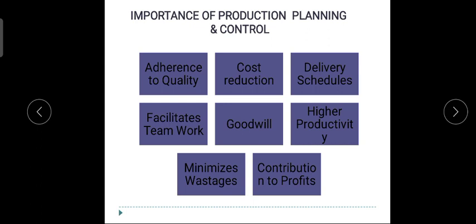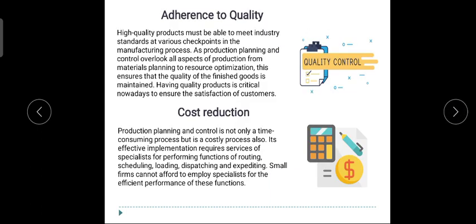The first importance is adherence to quality. Most of the time people ask: what is the quality that production planning and control facilitates? They try to improve quality. I am checking each and everything, I am testing each and everything — what should my work be done, it should be done in a proper way. Now we have to focus on quality control.